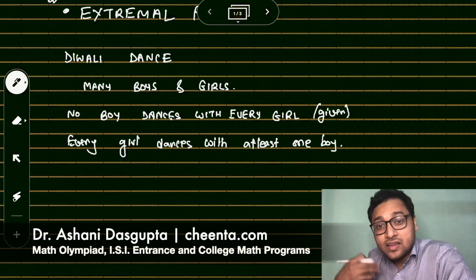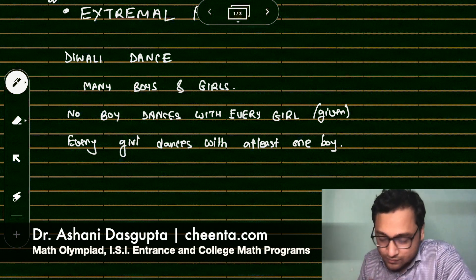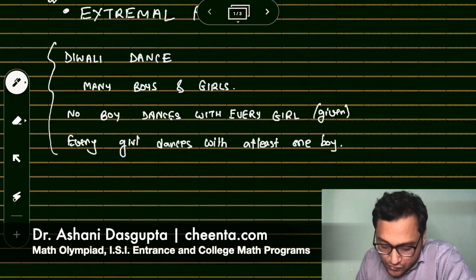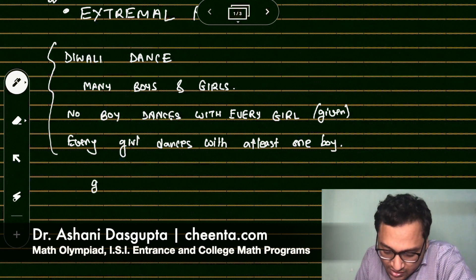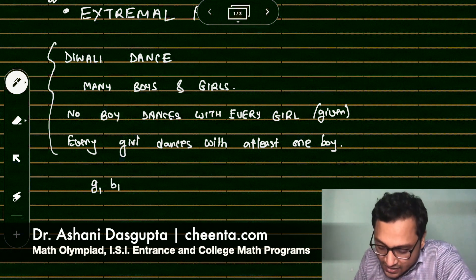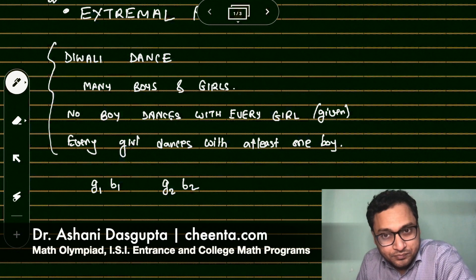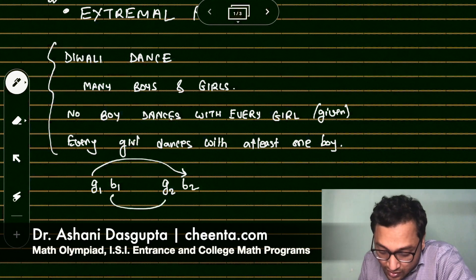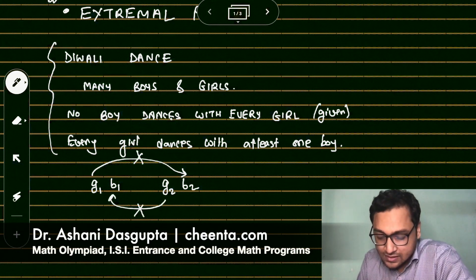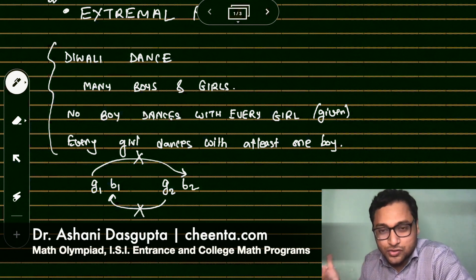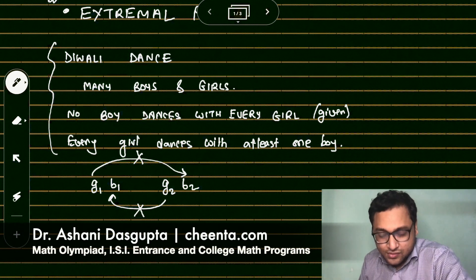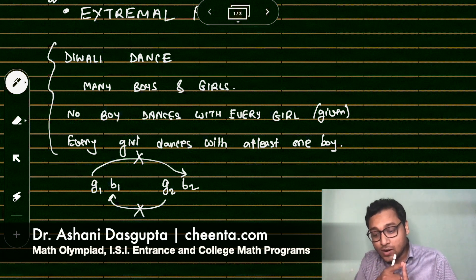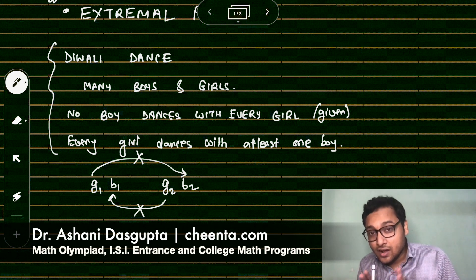And it is also given that every girl dances with at least one boy. So given this information, what do we have to show? We have to show that there is a pair G1B1 and G2B2, another pair, such that G1 never dances with B2 and G2 never dances with B1.